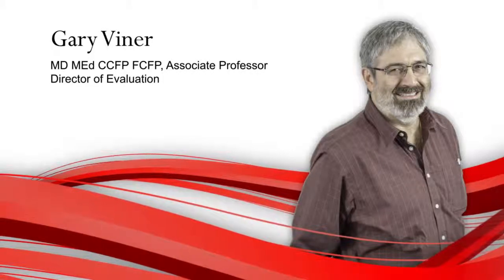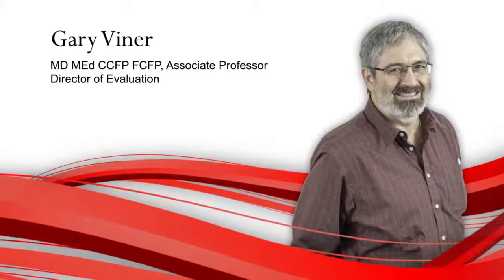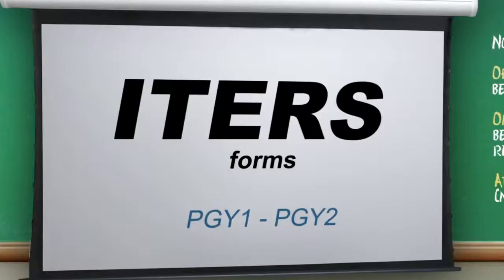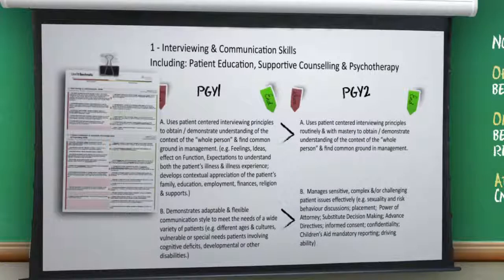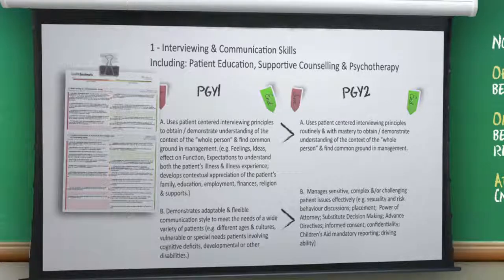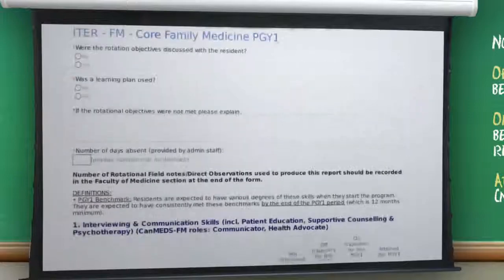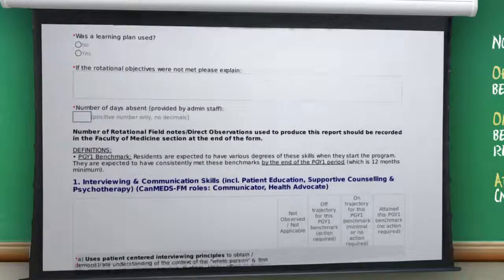I'd like to explain the new Core Family Medicine EIDR forms and lead you through the various changes. Two distinct Core Family Medicine EIDR forms have been produced to assess the competencies developed over the two-year program. The forms for PGY-1 and PGY-2 are based on the benchmarks that we would expect the resident to achieve by the end of each of those periods.